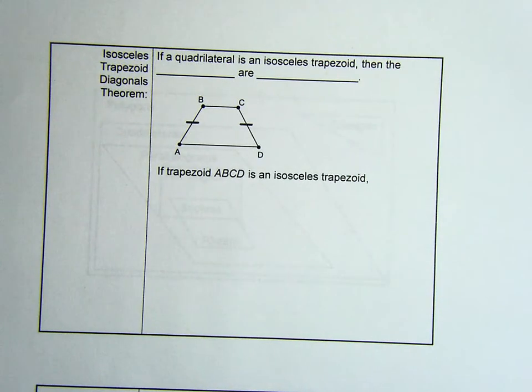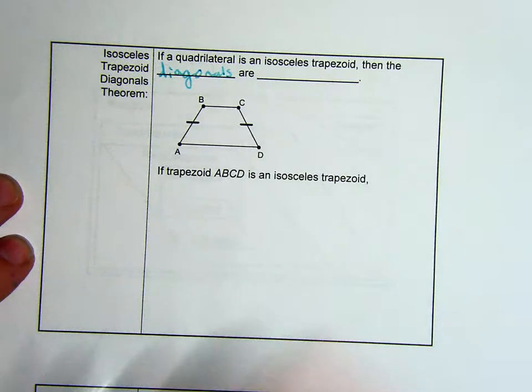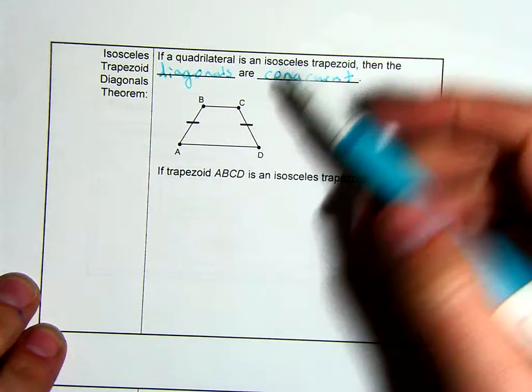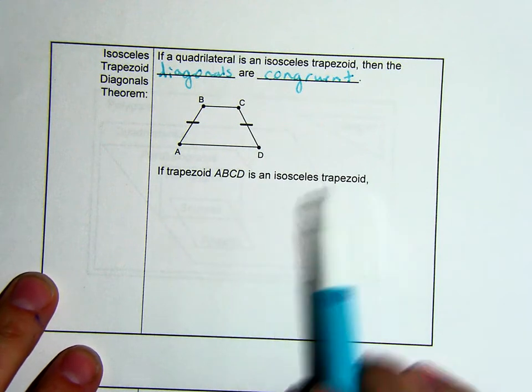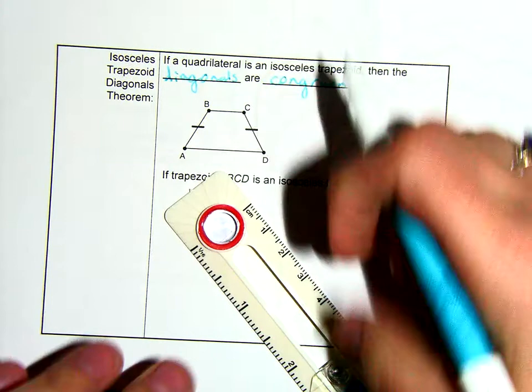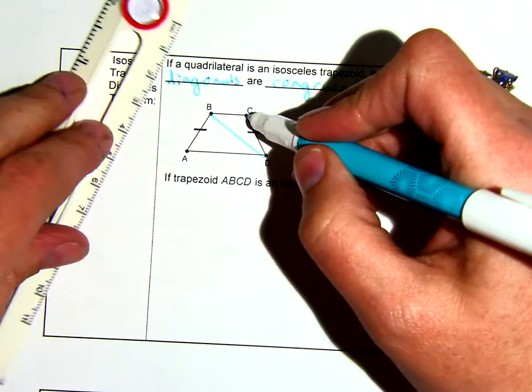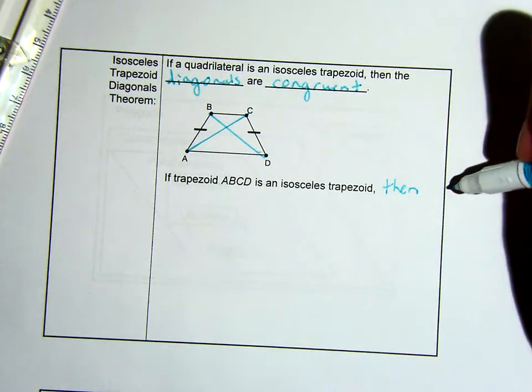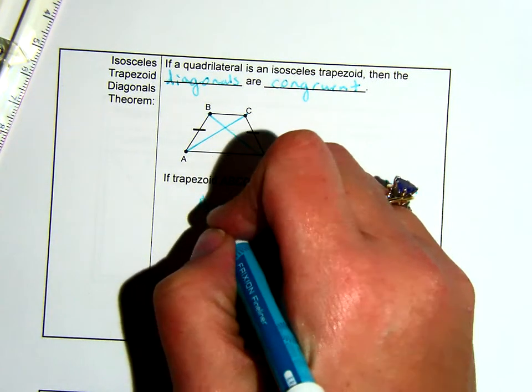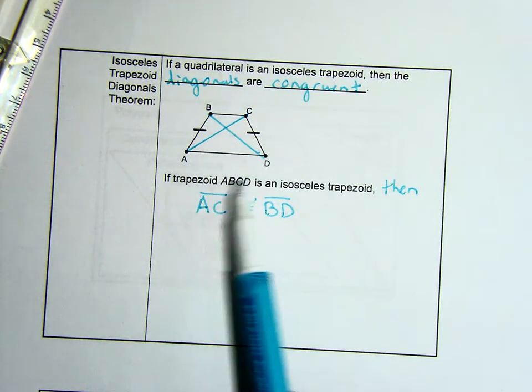Next isosceles trapezoid theorem we have is the isosceles trapezoid diagonals theorem. If a quadrilateral is an isosceles trapezoid, then the diagonals are congruent. So is this an isosceles trapezoid? If trapezoid ABCD is an isosceles trapezoid, so we do know it is an isosceles trapezoid. Using this theorem, we then know and we need some diagonals. So we're going to go ahead and draw those in. So I'm going to connect B to D and I'm going to connect C to A. These are the diagonals. So with having this as an isosceles trapezoid, we now know that AC is congruent to BD. Again, this is only true if it was an isosceles trapezoid.